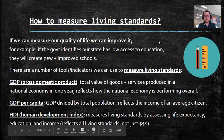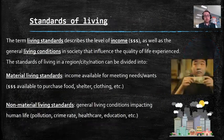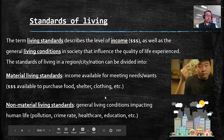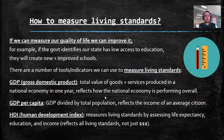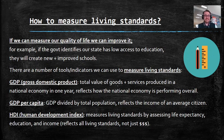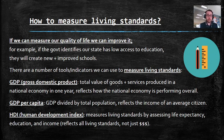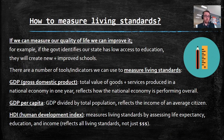We know how to classify our living standards, but how do we measure them? How do we say someone has a very good or very poor quality of life? If we can measure our quality of life, we can improve it. For example, if the government identifies that a state has low access to education, they can use tax dollars to create new and improved schools. That's why it's important to measure our living standards — we can't fix a problem until we know that problem exists.